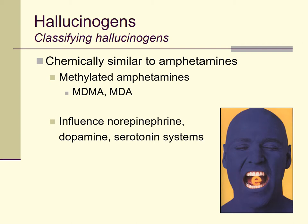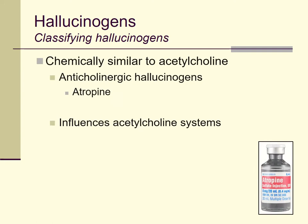Another group of hallucinogens are the methylated amphetamines. Most famous in this group is MDMA, or ecstasy, sometimes called molly. There are other similar compounds like MDA. As the name suggests, these are tweaked versions of amphetamines, and sometimes in pharmacology textbooks MDMA is grouped with stimulants like dextroamphetamine and methamphetamine. In this lecture we're pulling those out and talking about them with hallucinogens because they do produce distortions in perception similar to other hallucinogens. These drugs act on monoamine systems including serotonin, norepinephrine, and dopamine, though they share some pathways with the serotonergic hallucinogens.